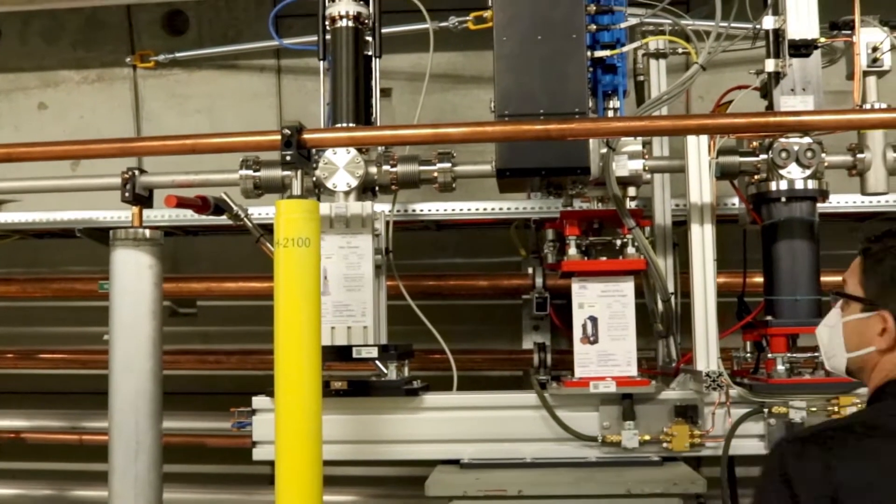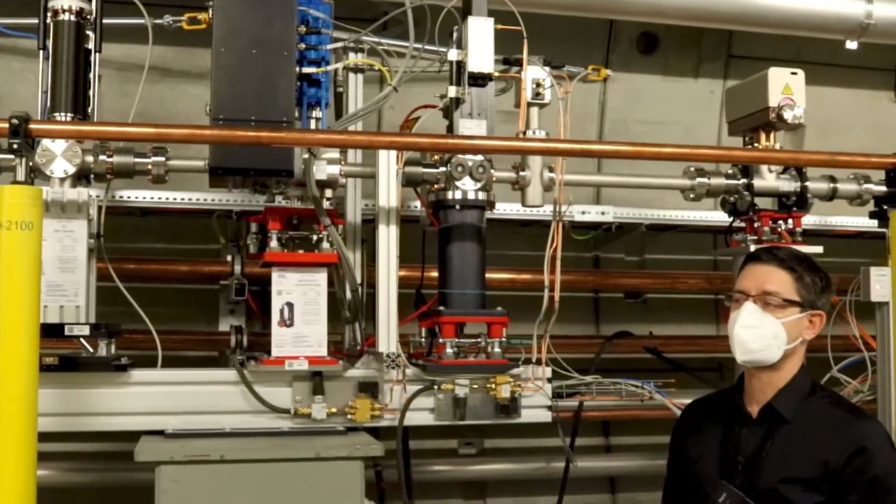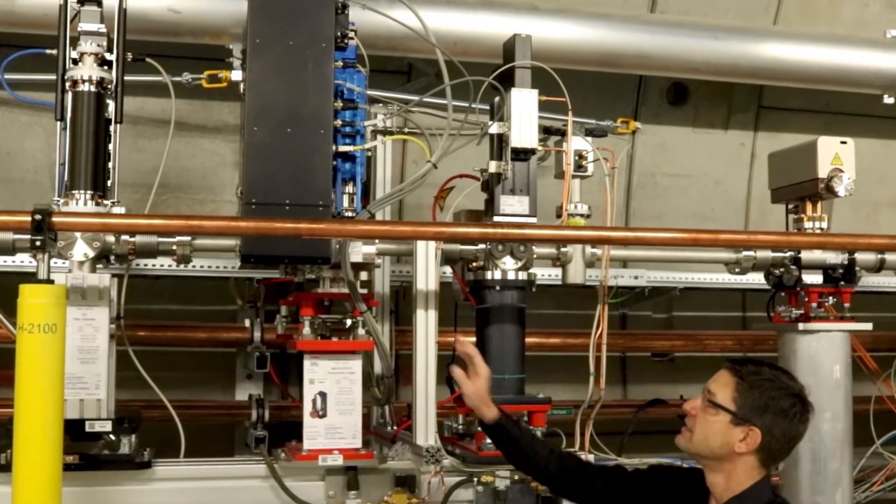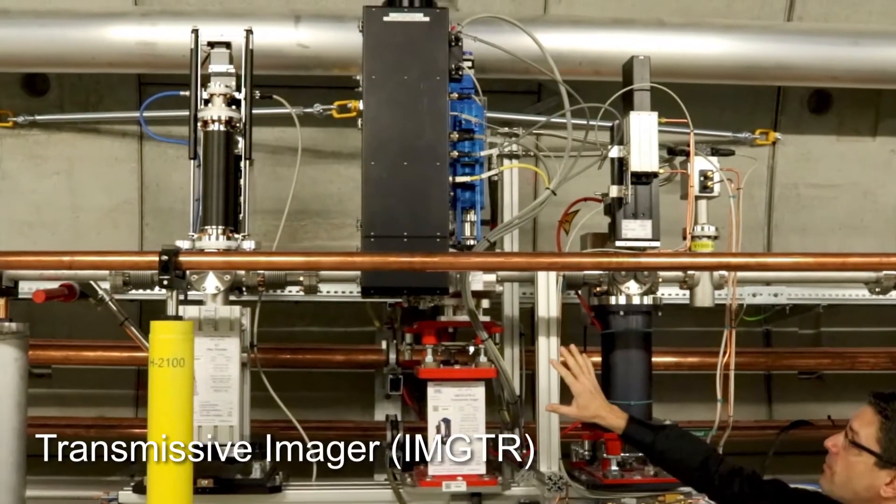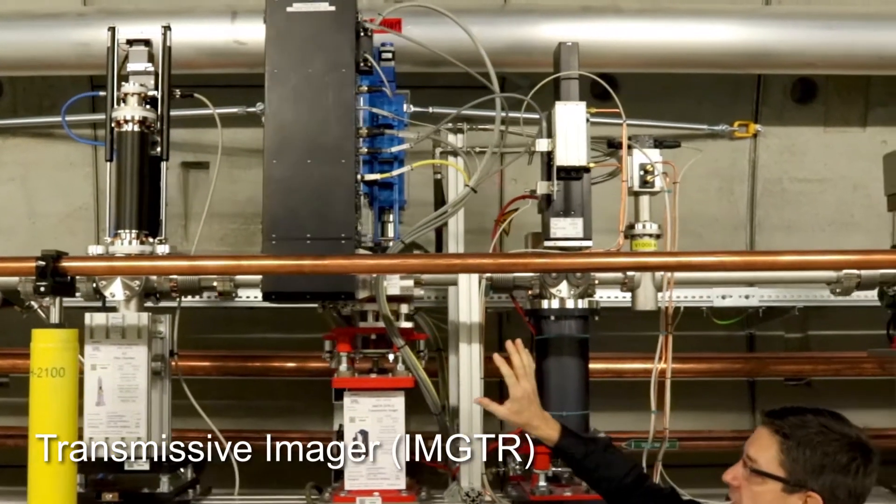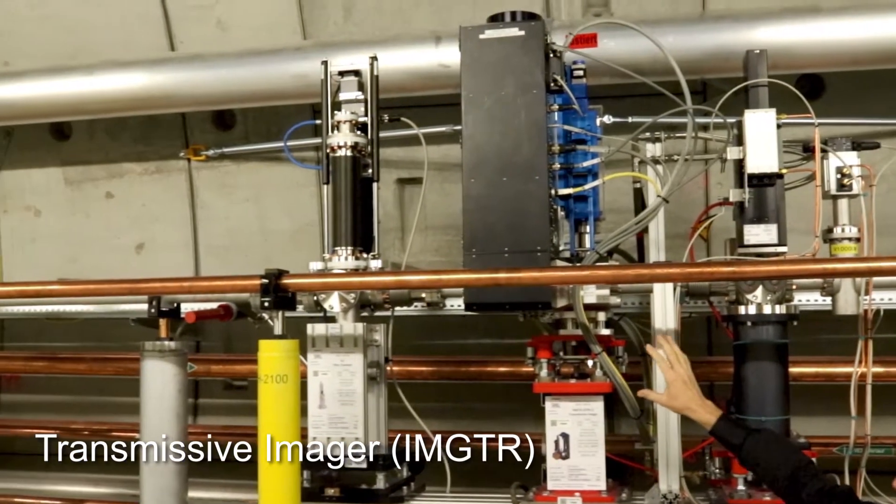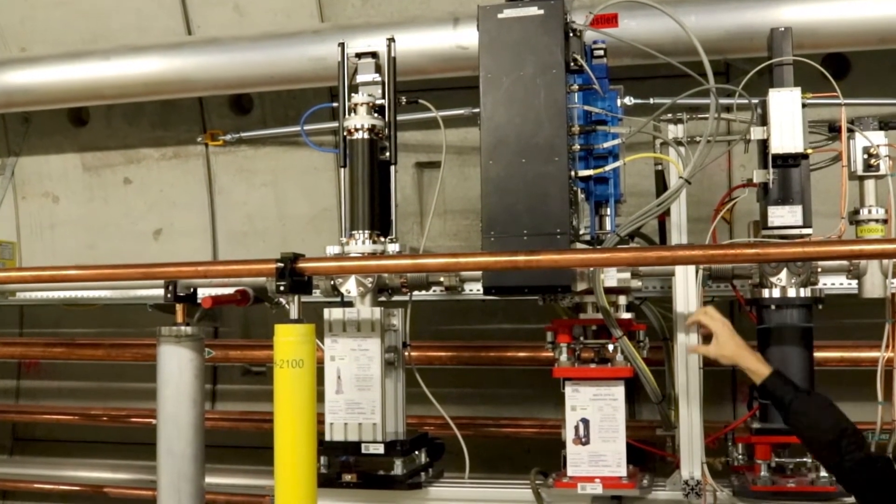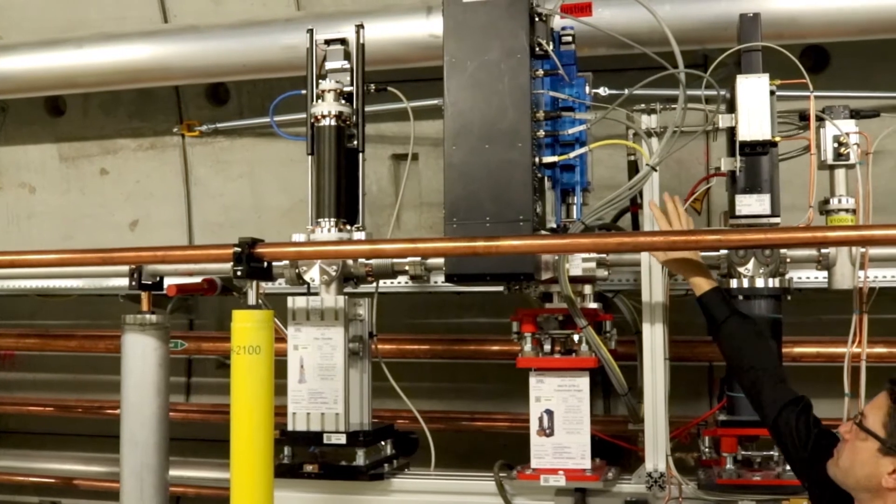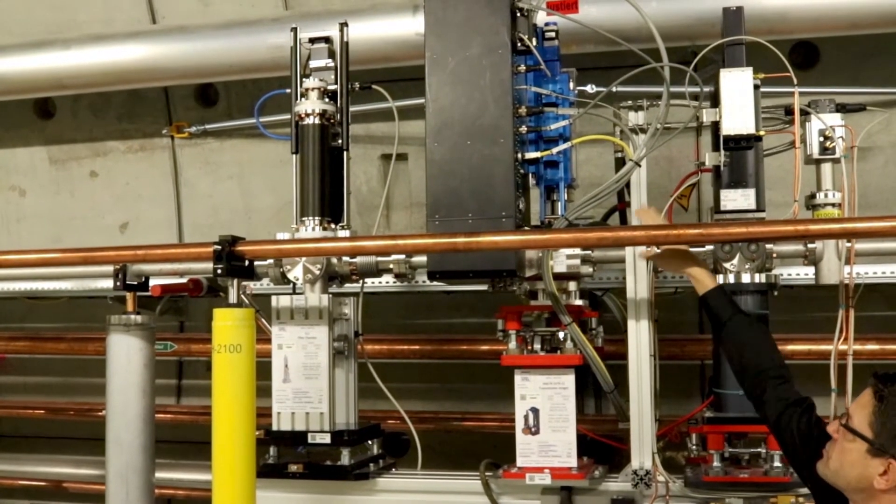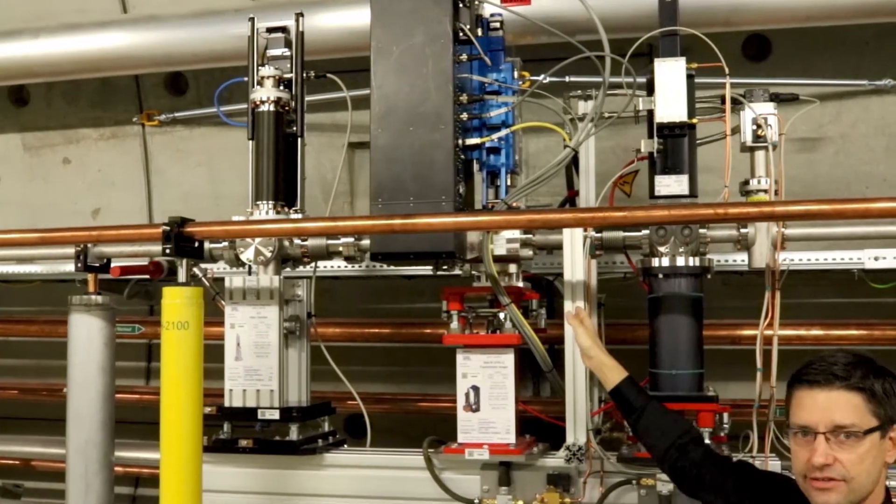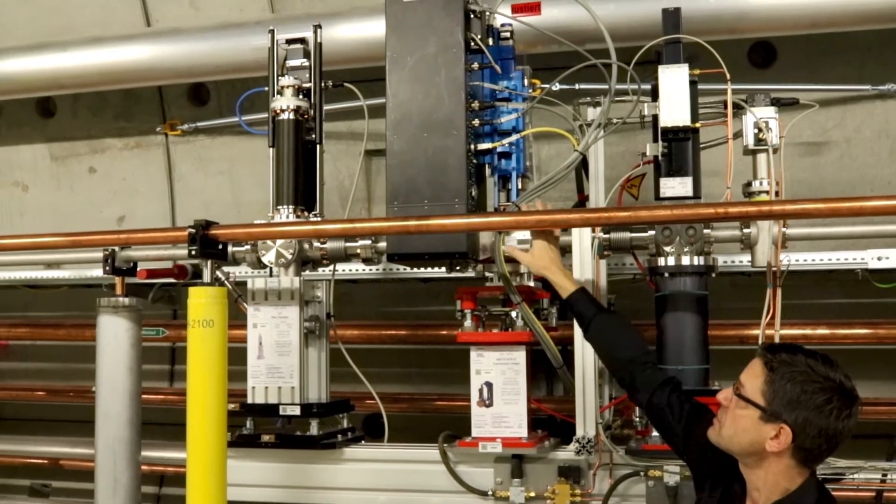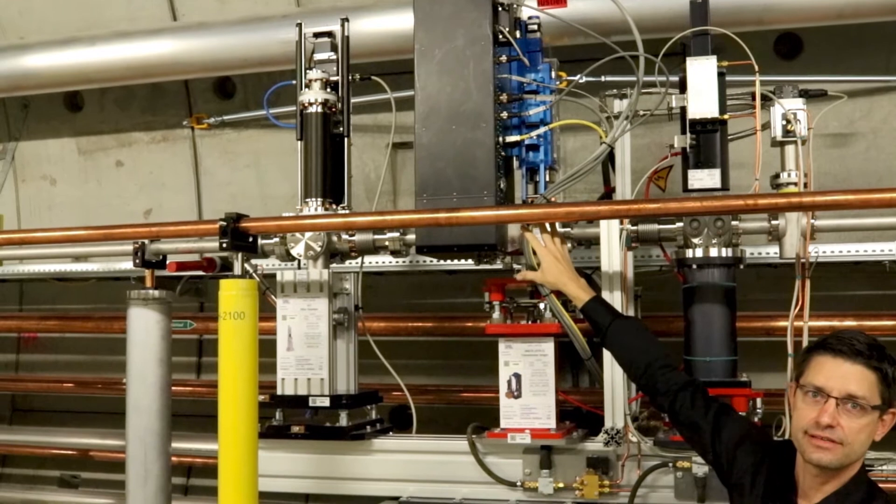The very first object of photon diagnostics is on this girder. This is an imager where the X-ray beam can be observed, the transverse profile, by inserting a scintillator on a manipulator, which is driven by a motor here on this blue structure. The scintillator is inserted and the beam is imaged by a camera system inside this black box.